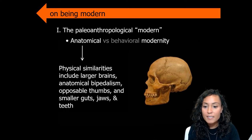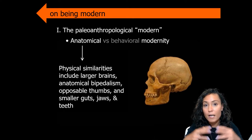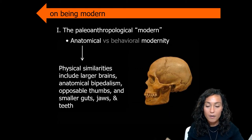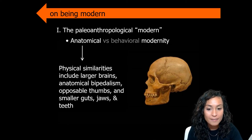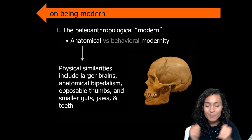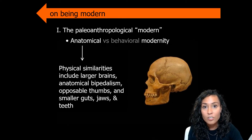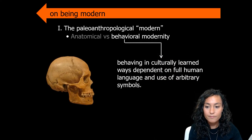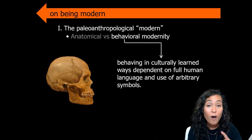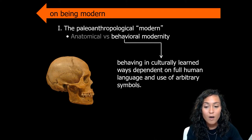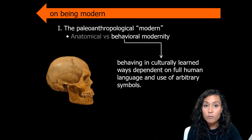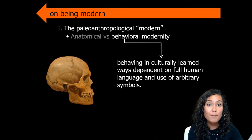During this time period, Homo sapiens were anatomically modern — they had large brains, anatomical bipedalism, opposable thumbs, and smaller guts, jaws, and teeth. Around 40,000 years ago, our Homo sapien ancestors also developed behavioral traits similar to ours. Specifically, they gained the capacity to act in culturally learned ways dependent on full human language and the use of abstract symbols — think the alphabet.